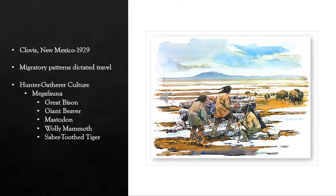The earliest culture identified is the Clovis, so named for the Clovis points first discovered in Clovis, New Mexico in 1929. These points were crafted stone spearheads used primarily in hunting game, and once identified in New Mexico, were recognized in finds located across North America. Although there appear to be earlier cultures, the Clovis designation identifies a widespread hunter-gatherer culture that subsisted primarily on hunting so-called megafauna — large animals like the great bison, giant beaver, mastodon, mammoth, saber-toothed tiger, and others.